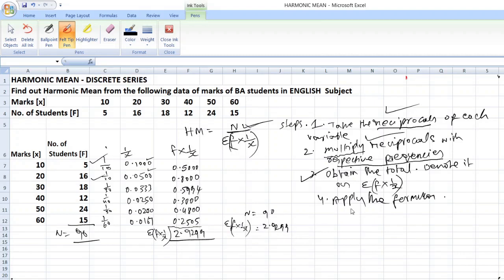And now if you apply the formula. The answer is equal to... Let me do that. HM is equal to 90 divided by 2.9 2 double nine. That comes to 30.7178. 30.7178. That is the answer. Okay students.